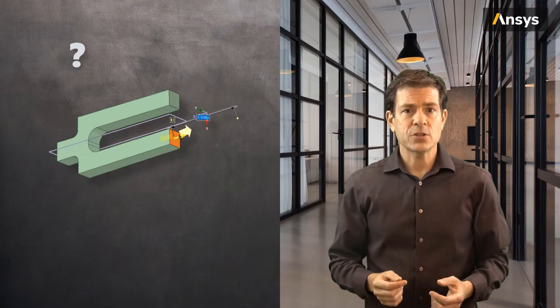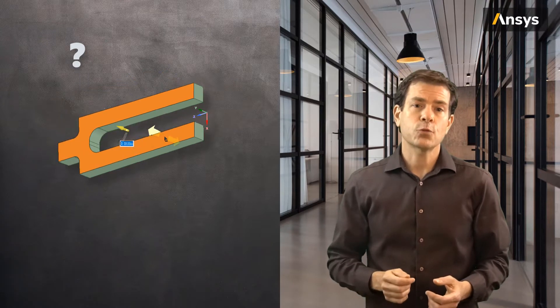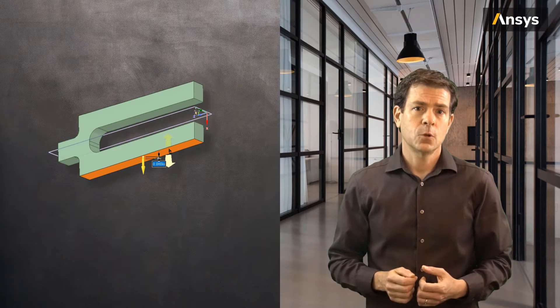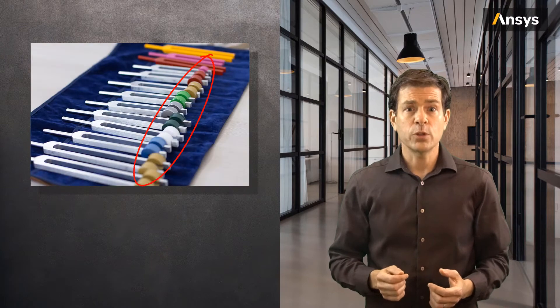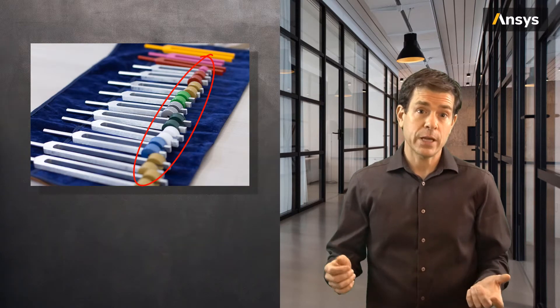So now looking at the tuning fork, what would be the most important dimension of the fork that governs the natural frequency? Or if we were to add weight to the tips of the forks, would the frequency go up or would it go down? Let's use a simulation model of a tuning fork to answer these questions.